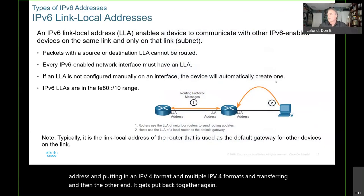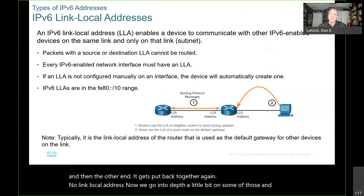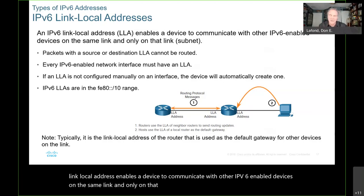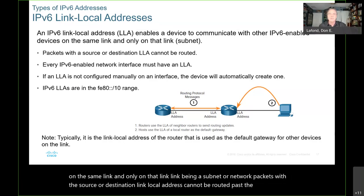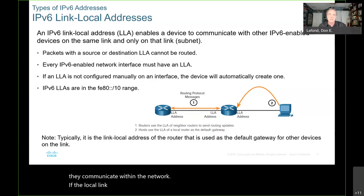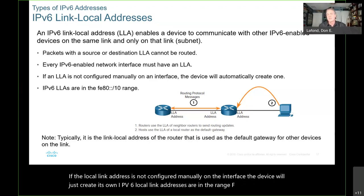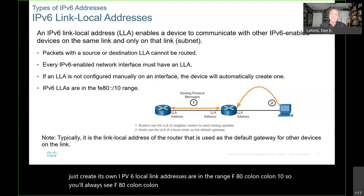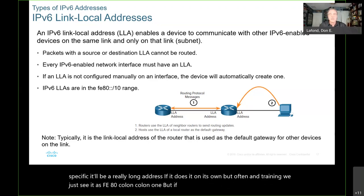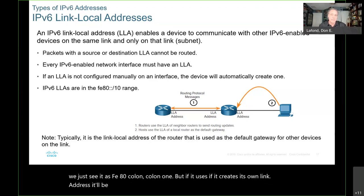An IPv6 link local address enables a device to communicate with other IPv6-enabled devices on the same link only. Packets with a source or destination link local address cannot be routed past the router. Every IPv6-enabled network interface must have a link local address because that's how they communicate within the network. If not configured manually, the device will create its own. Link local addresses are in the range FE80::/10. In training, we often see them as FE80::1, but if a device creates its own link address, it'll be a longer random number.